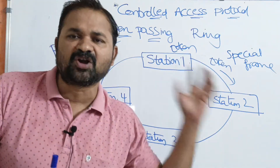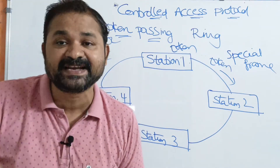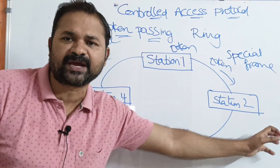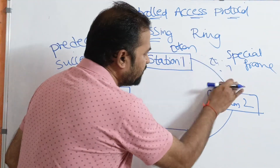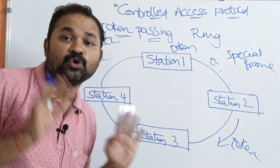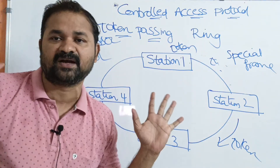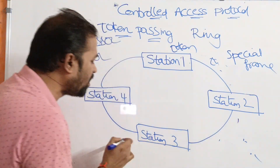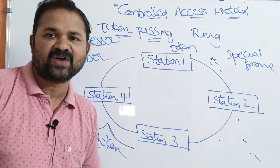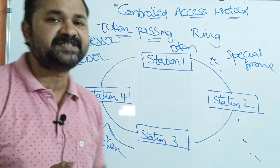After sending the data, the corresponding station forwards the token to its next station. Let station 2 has some data as well as the token — station 2 will send the data, and after sending the data, it will send the token. Let station 3 has no data, but it has the token. Now station 3 will immediately forward the token to its next station, because it has no data. Likewise, the token will be circulated in the ring fashion. This is about token passing.